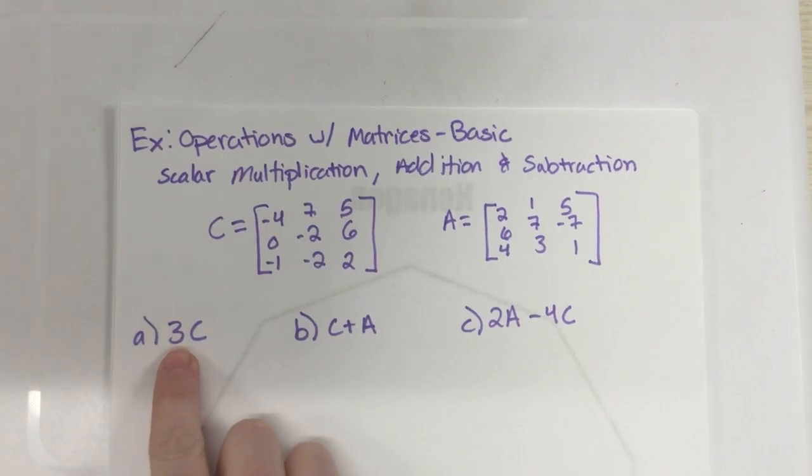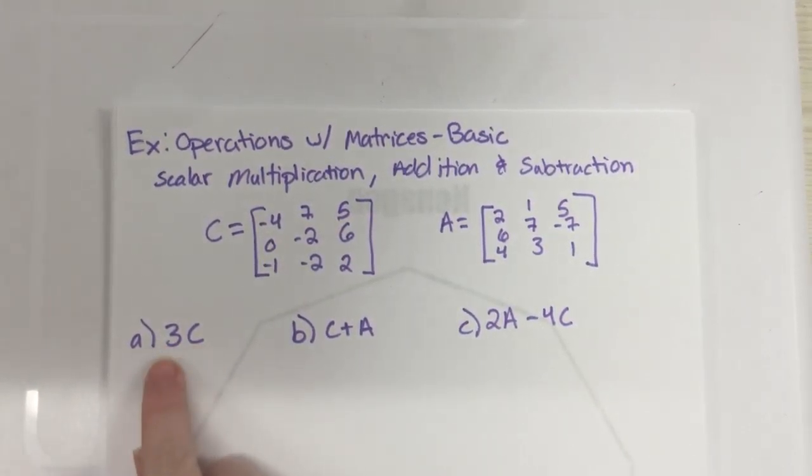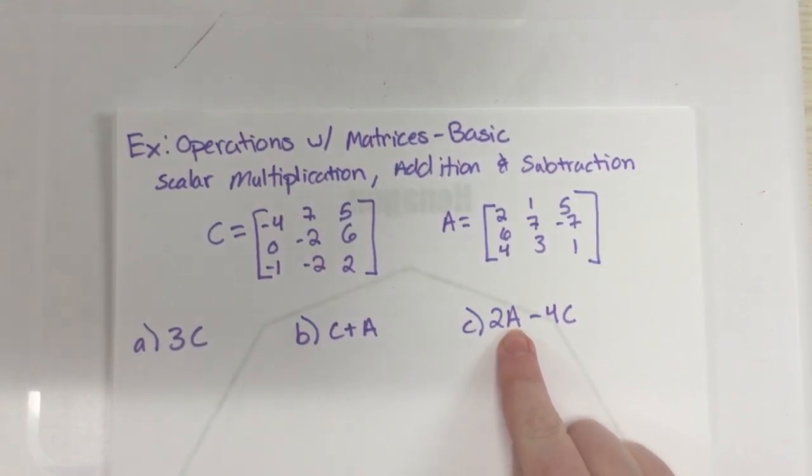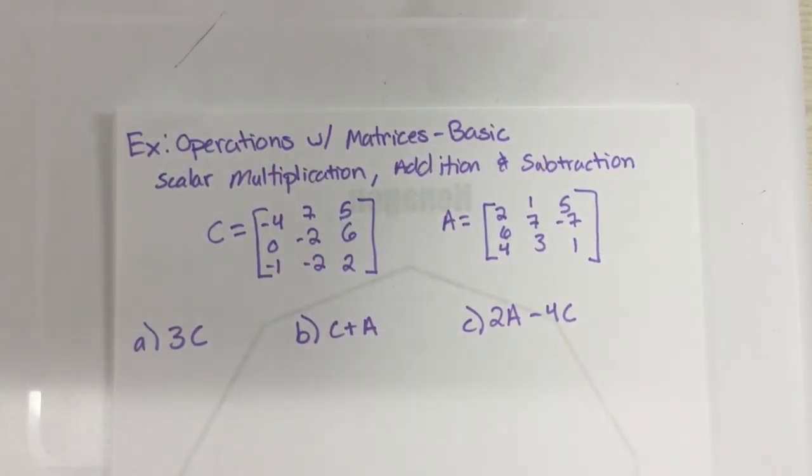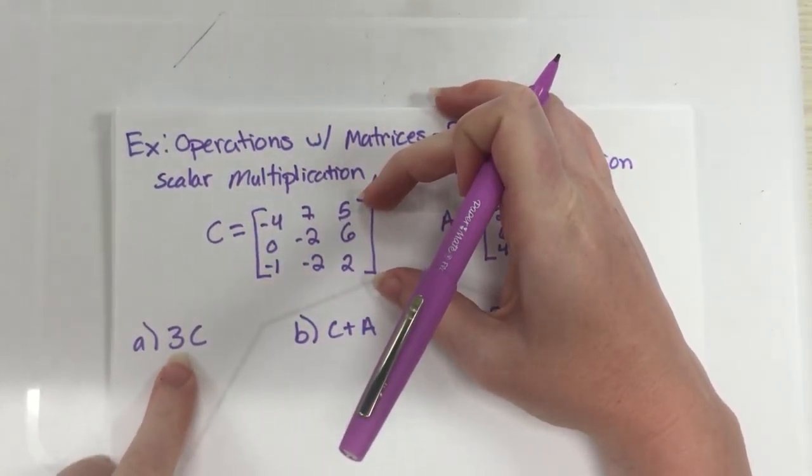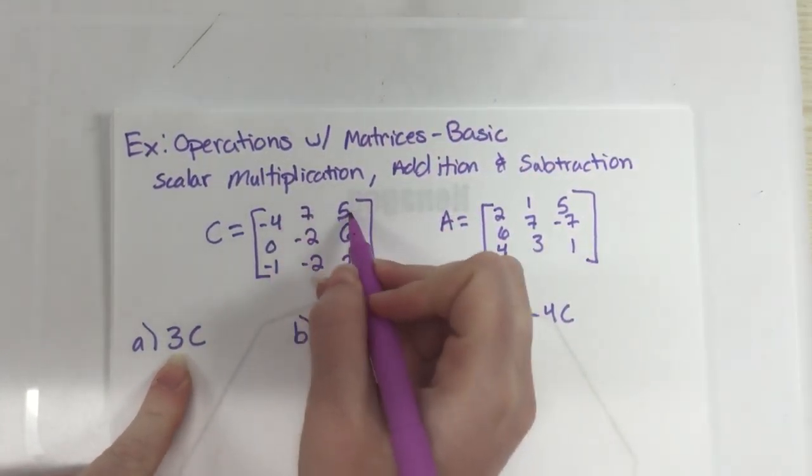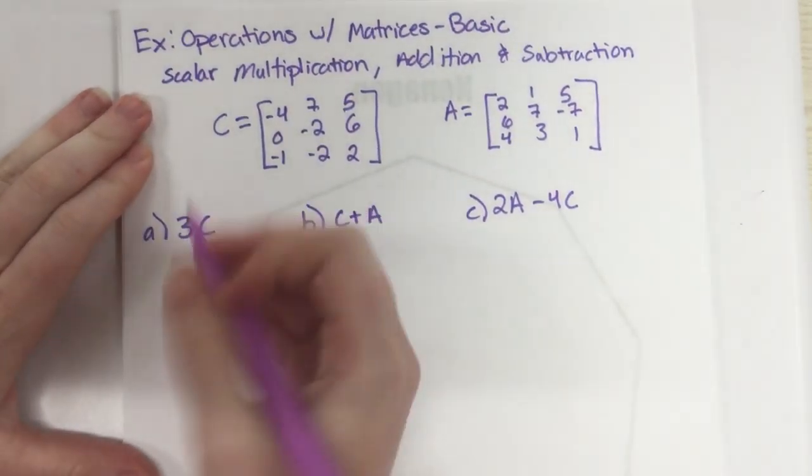Scalar multiplication is when you just multiply the entire matrix by a number. So right here, I'm multiplying matrix C by 3. This one, I'd multiply matrix A by 2 and matrix C by 4. That's all scalar multiplication is. And what that means is, I'm taking this matrix, and I'm multiplying it by 3. So you take every element, every number in there, and just multiply it by 3. That one's pretty simple.